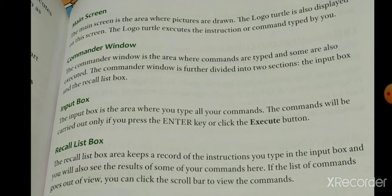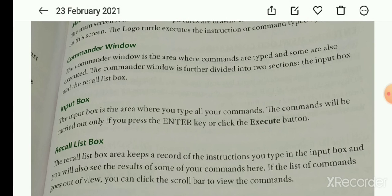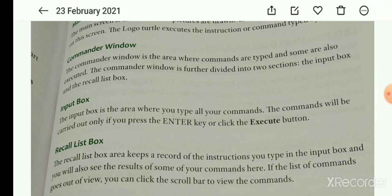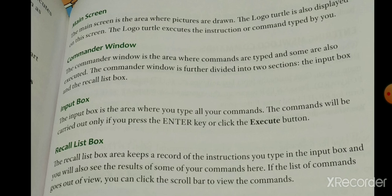The recall list box gives a record of the instructions you type in the input box, and you will also see the result of some of your commands here. Recall list box एक ऐसा area है जहां input box में type किए गए commands का record और result दिखता है. If the list of commands goes out of view, you can click the scroll bar to view the commands.